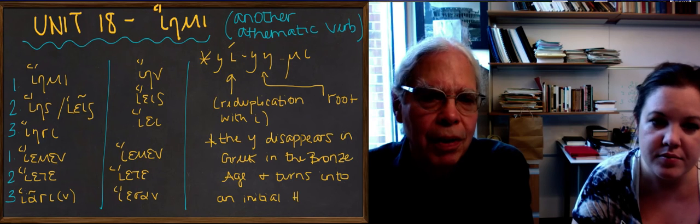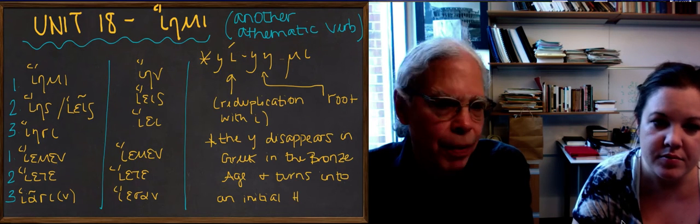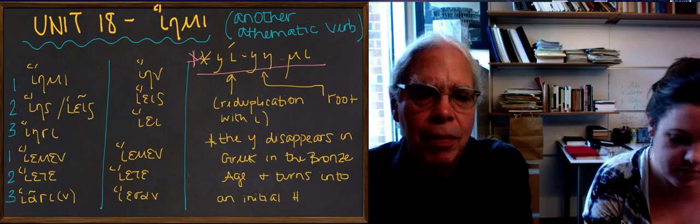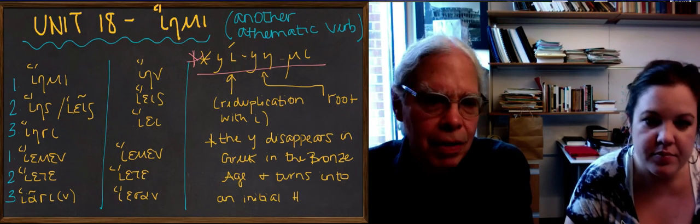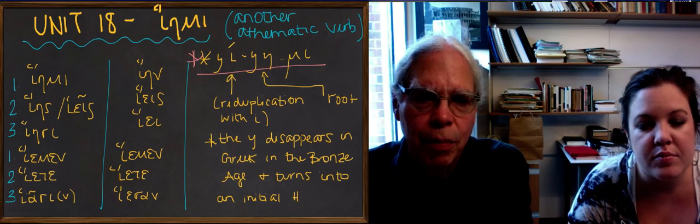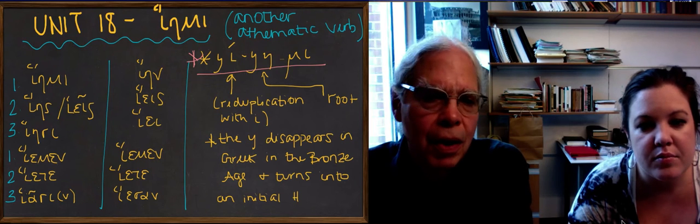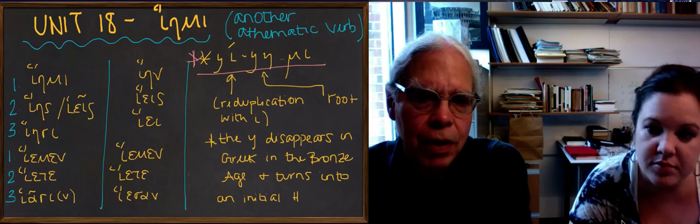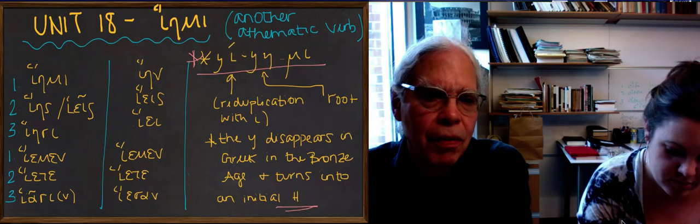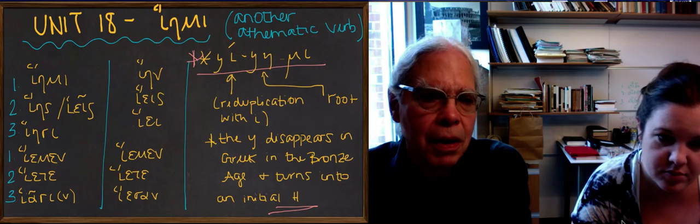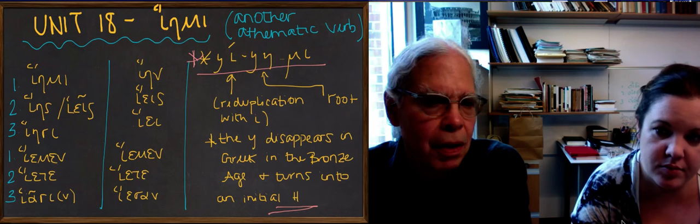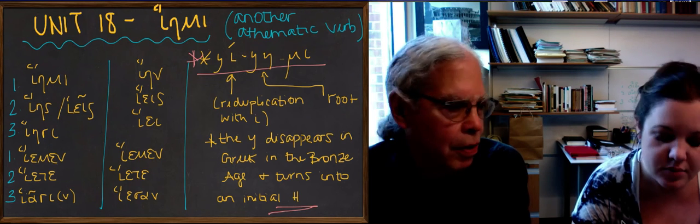Balisi's put up on the blackboard the asterisk form there, with ye ye mi, that's the original form. Once was a y in ancient Greek, there isn't anymore. So you can see that this is a reduplicated form like didomi, that's the present of the verb. Originally there was a y, when the y disappeared, it turned into an initial h. So yes, the first form is he ye mi, not ye ye mi. But that ye, which becomes he, is going to disappear outside of the present system.